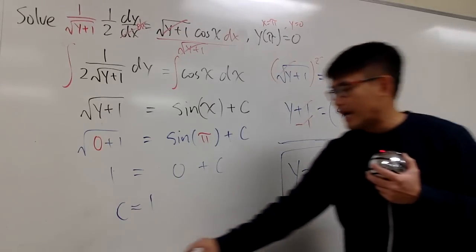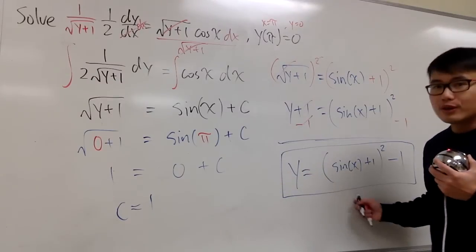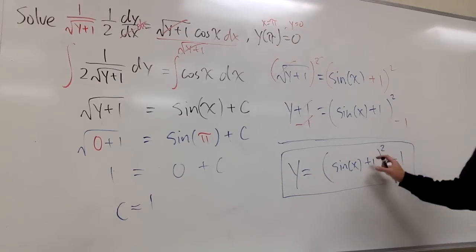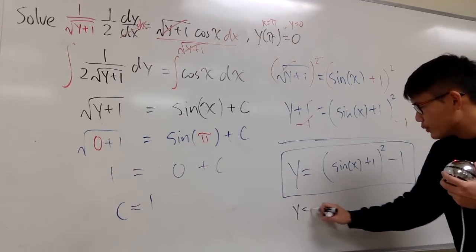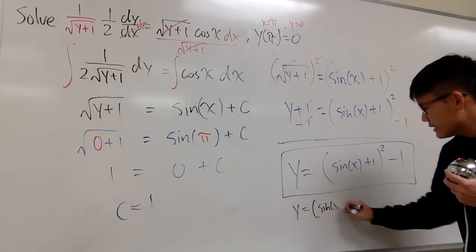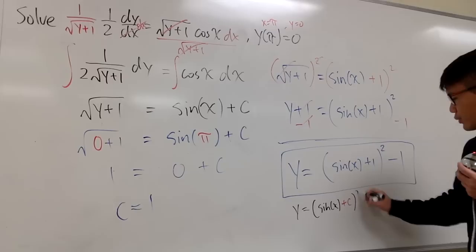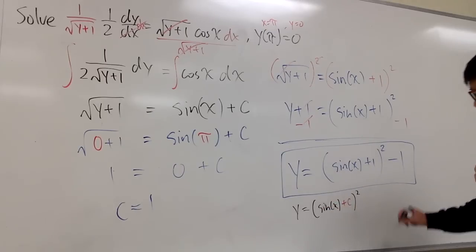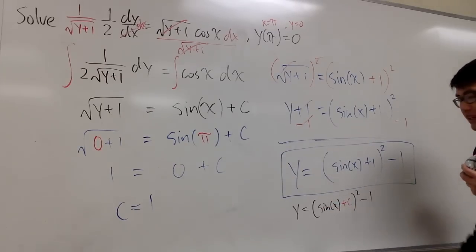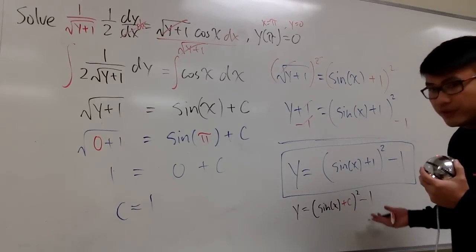Imagine if you isolate the y first. And this is where the c was, right? So if you isolate the y first, you will have y is equal to sine of x plus the c, which we don't know what it is. And you square that. This is my sine of x, and then minus 1 after that.